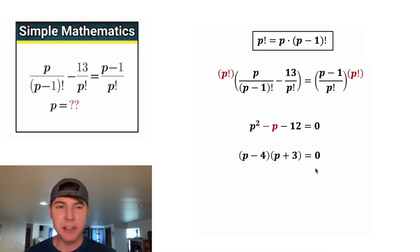From here, since these two things multiply to equal zero, it will be true if either one of them is equal to zero. For this one on top, we can add four to both sides. And for the one down here, we can subtract three from both sides. So we end up with P is equal to four, or P is equal to negative three.